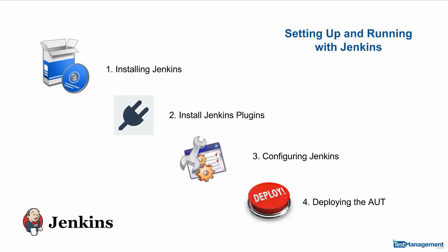Then we're going to look at configuring Jenkins. We'll set it up to integrate with Amazon AWS, put in the build scripts, and put in the initialization scripts for AWS servers. And finally, in the fourth part, we'll look at how to configure Jenkins so that it will deploy our application under test, build it, install it, and run some initial tests.